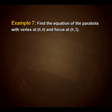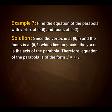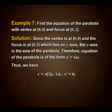Example: find the equation of the parabola with vertex at (0, 0) and focus at (0, 2). Since the vertex is at (0, 0) and the focus is at (0, 2) which lies on the y-axis, the y-axis is the axis of the parabola. Therefore the equation is of the form x² = 4ay, giving x² = 4·2·y, that is x² = 8y.